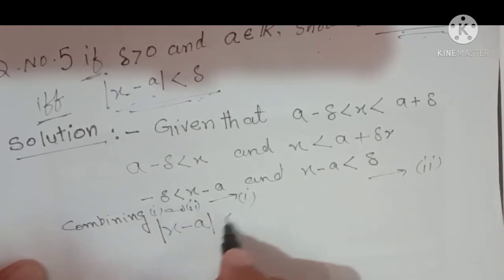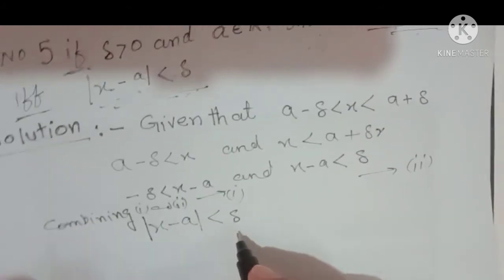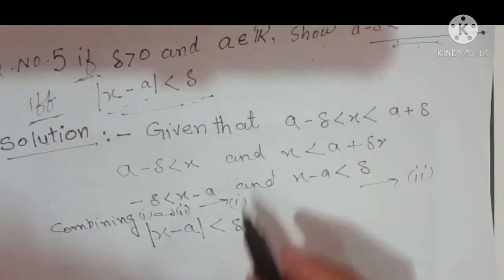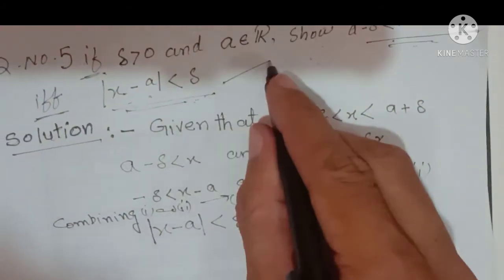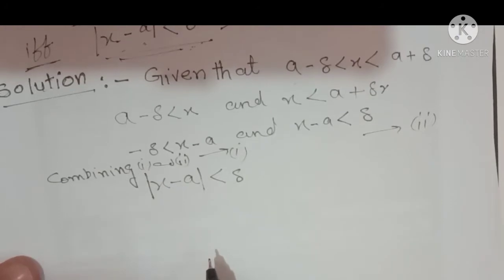Combining equation 1 and equation 2, we get |x minus a| < delta. This means the first part is proved.